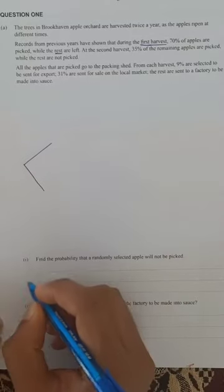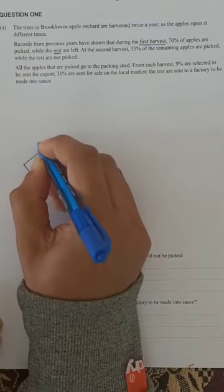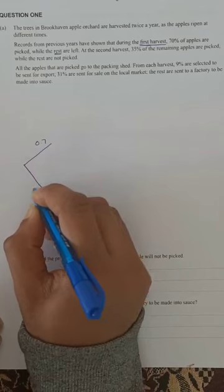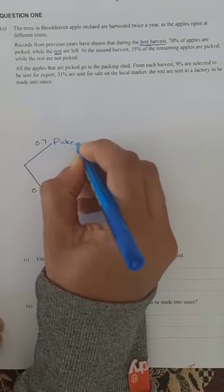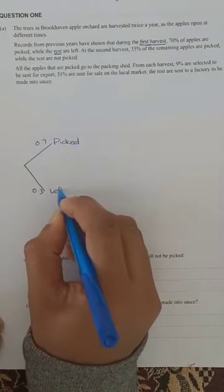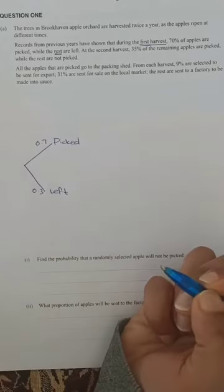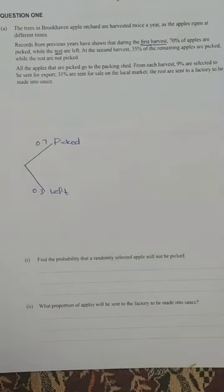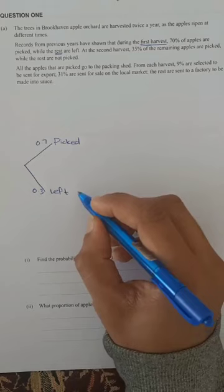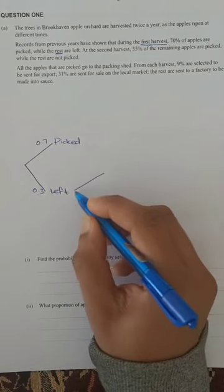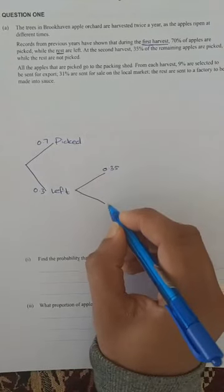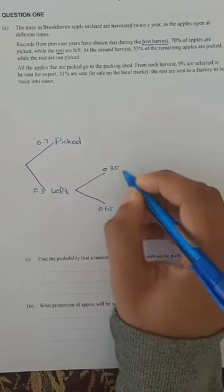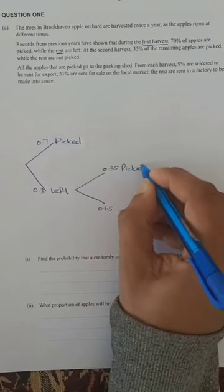The first event has its first branches: 70% is the probability they will be picked and 30% that they will be left. The next part says at the second harvest, 35% — if they're left behind they go into the second harvest, if they get picked they don't. So 35% picked and 65% left on the second harvest.